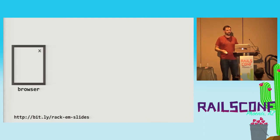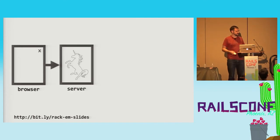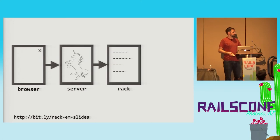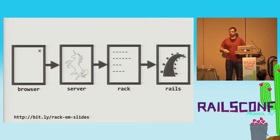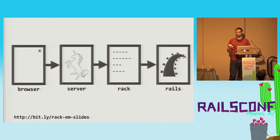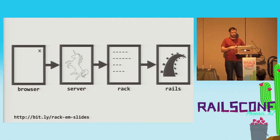When a user comes to a website from a browser, they make a request. That request goes across the internet and gets handled by some sort of web server — typically something like Unicorn or Puma. That web server then has to figure out what to do with that request, and that is where Rack comes into play. Rack is the interface that those web servers talk to in order to communicate that a web request just happened. Rack in turn passes that request along to a web framework of your choice, something like Rails or Sinatra. So Rack is sort of the glue that sits between your web server and your application code.